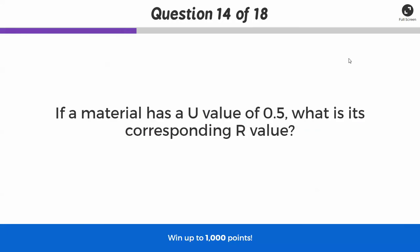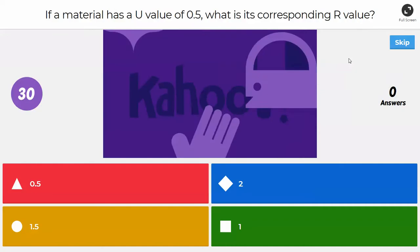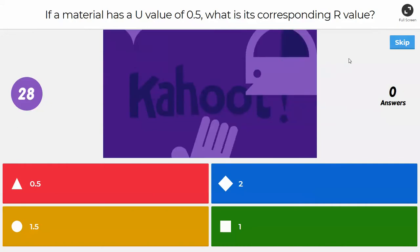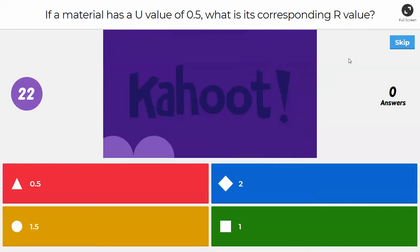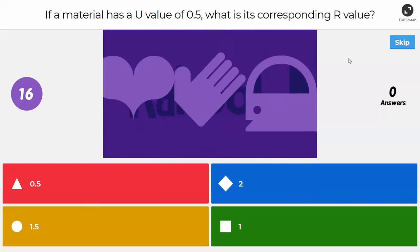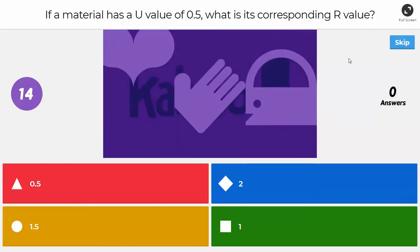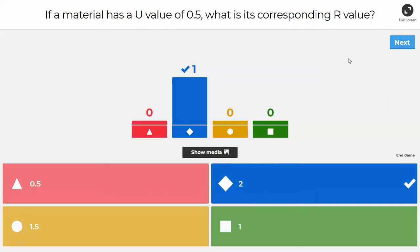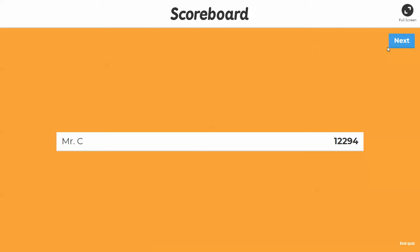All right, next question. If a material has a U value of 0.5, what is its corresponding R value? Is it 0.5? Is it 2? Is it 1.5? Or is it 1? We'll give the answer at 15 seconds. Yeah, 2 would be that. Because remember, the U value and the R value, they're just reciprocals of each other. So if you know one, just do the reciprocal to find out the other.